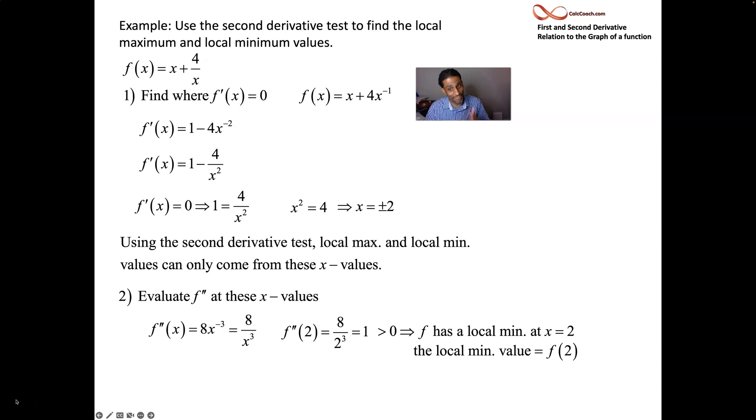Plug a -2 in, you'll get a -1 out. Concave down like a frown, local max. If you want the value, you've got to go back to the function, not the derivative, not the second derivative. You've got to go back to the function to get the actual value. So if the second derivative is easy to take, this should be your go-to: the second derivative test.